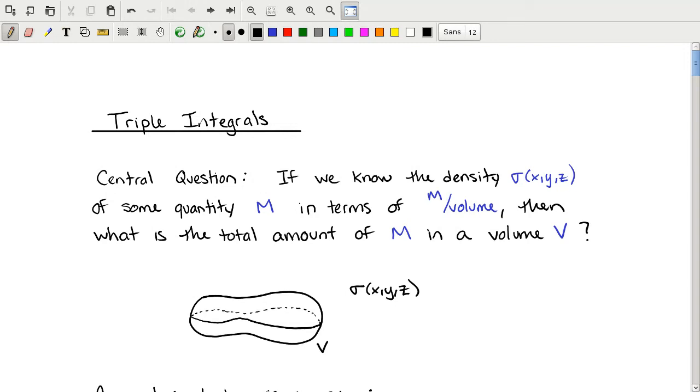In this lesson, we move on to triple integrals. A general problem we'll consider with triple integrals is: if we know the density of some quantity in terms of something per unit volume, then how do we calculate the total amount of that something in a given volume? For concreteness, let's consider mass—a mass density in terms of kilograms per meter cubed, when integrated over a volume, gives us total number of kilograms.